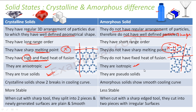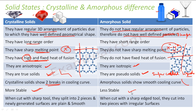Crystalline solids are true solids, whereas amorphous solids are pseudo solids — in fact, they are supercooled liquids. Crystalline solids show two breaks in the cooling curve, while amorphous solids have a smooth cooling curve. Crystalline solids are more stable and sturdy; amorphous solids are less stable.